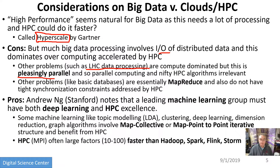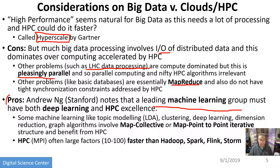A slightly more subtle case is MapReduce. In fact, LHC processing is MapReduce when you classify it properly, however the largest part of LHC is MapOnly and that dominates over the reduce stage. Andrew Ng noted that every leading machine learning group must have deep learning and HPC excellence because deep learning is HPC intensive. Things like topic modeling, clustering, dimensional reduction, and graph algorithms involve a mix of map collective and map point-to-point, and they all have an iterative structure and benefit from HPC.